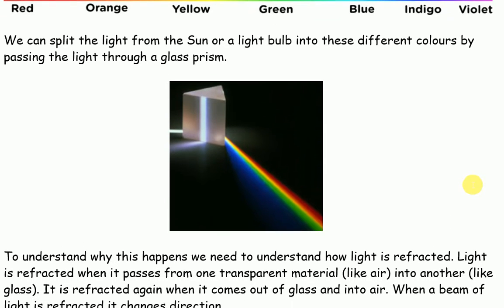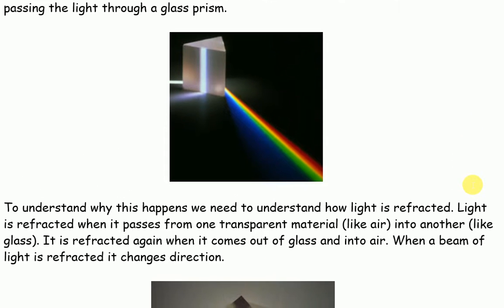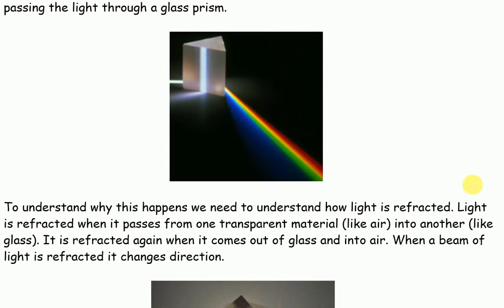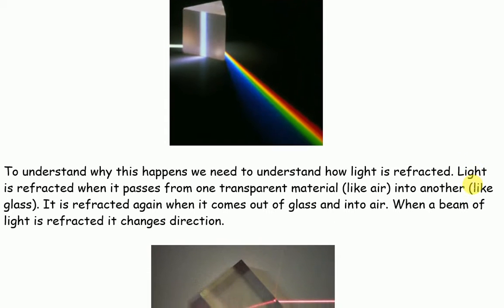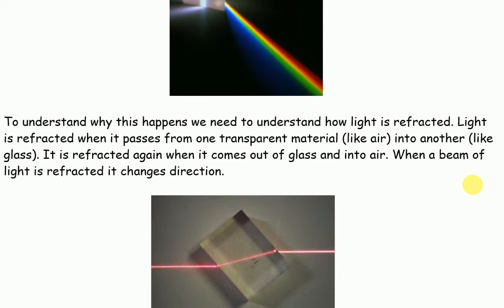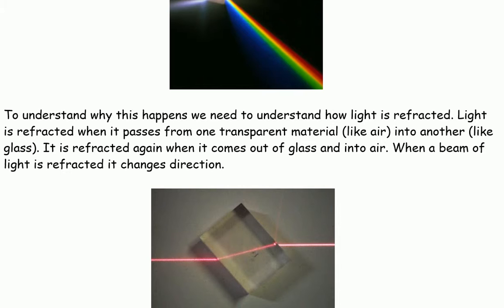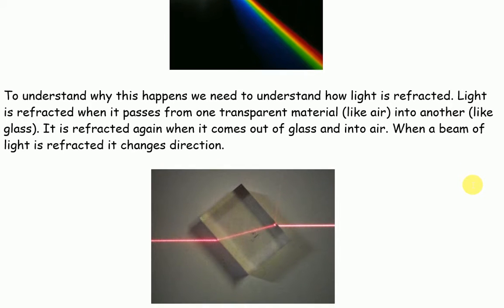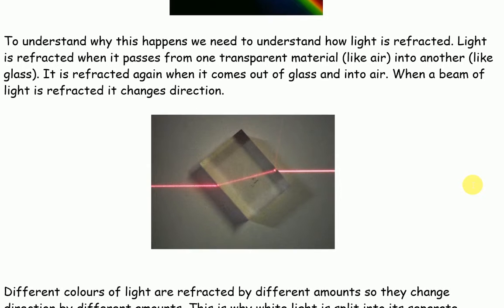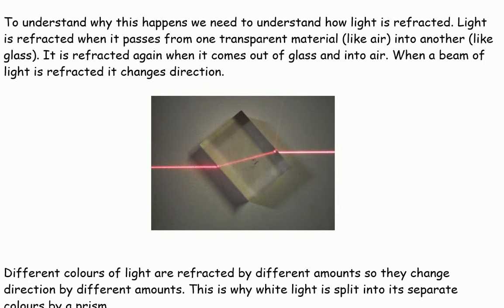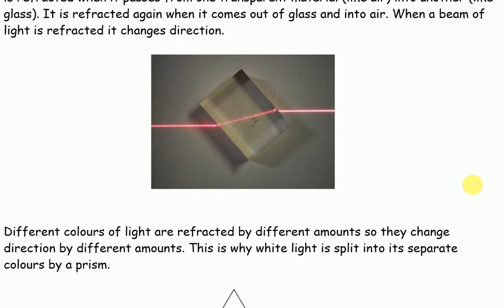To understand why this happens we need to understand how light is refracted. Light is refracted when it passes from one transparent material, like air, into another, like glass. It is refracted again when it comes out of glass and into air. When a beam of light is refracted it changes direction.